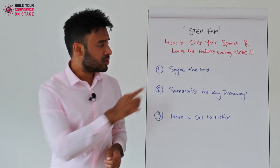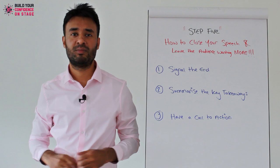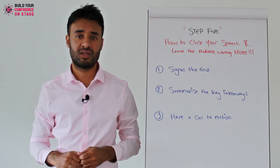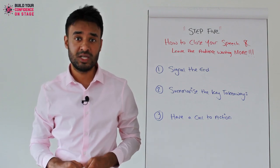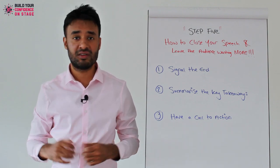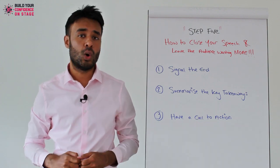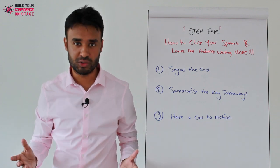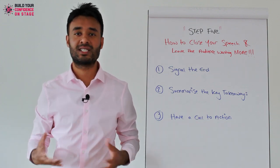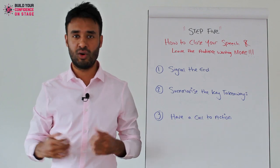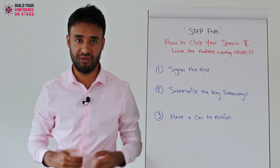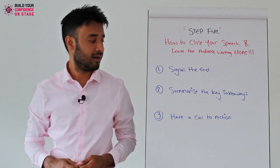So how do you signal the end? It's very simple and straightforward. Let's say you've given a 20–30 minute speech and you need to signal the end — you just need to say things like 'in summary' or 'in conclusion.' At least that way, it triggers the end of your speech and the audience knows, okay, you're entering the last couple of minutes.